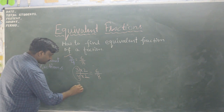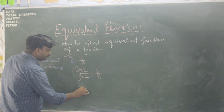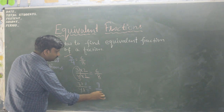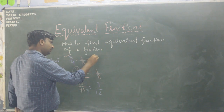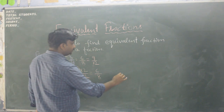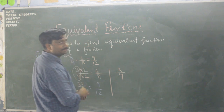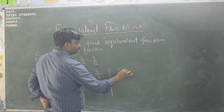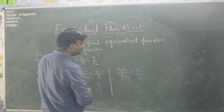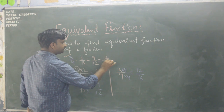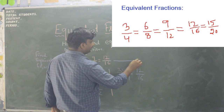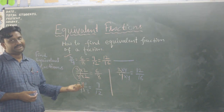Again three upon four — let us multiply numerator and denominator by 3: 3 threes are 9, 4 threes are 12 — another equivalent fraction is nine upon twelve. Multiply by 4: 4 threes are 12, 4 fours are 16 — so next equivalent fraction is twelve upon sixteen. In this way we can find any number of equivalent fractions by simply multiplying with the same number in numerator and denominator.